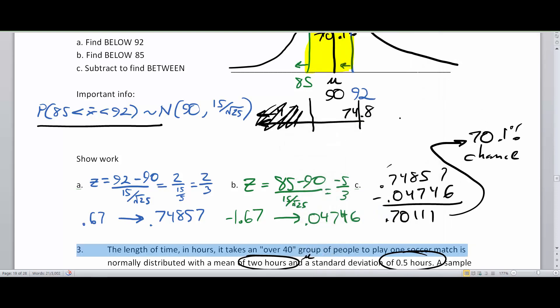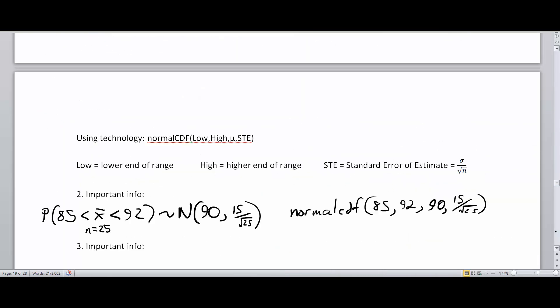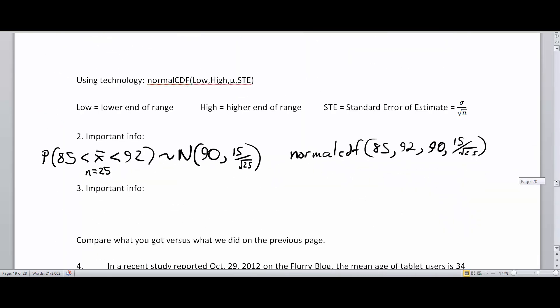It's time to put the calculator away for a moment and take a look at the second example we had on that page, problem number three. That was dealing with renting a soccer field. So the probability of being between 1.8 hours for my group of 50 people to 2.3. This is a normal distribution here. My average was two hours and give or take a half hour, but we have the square root of 50 because we have 50 soccer teams here.